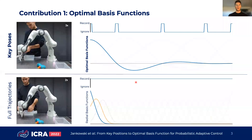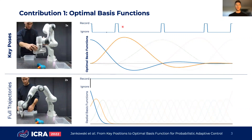First, we propose a new type of basis functions, also known as movement primitives in the context of learning from demonstration. When linearly combining these basis functions with a set of key positions from a demonstration, they form the analytic solution to a linear optimal control problem. For this formulation, one demonstration is a direct sample of the basis function weights that we want to learn, since each basis function is weighted by a single key position.